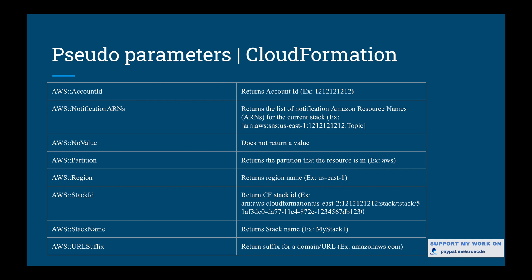Then we have AWS Region, which returns the region name that you are in. AWS StackId is straightforward — it returns the CloudFormation stack ID. AWS StackName returns the stack name entered while creating the stack. Finally, AWS URLSuffix returns the suffix for a domain — typically 'amazonaws.com', but it may differ by region. For example, the suffix for the China Beijing region is 'amazonaws.com.cn'. These are all the pseudo parameters available within AWS CloudFormation.